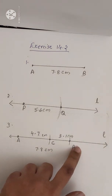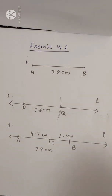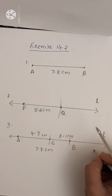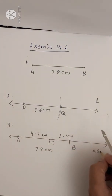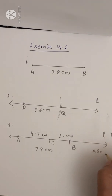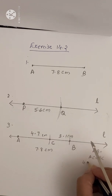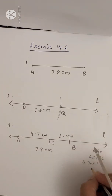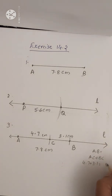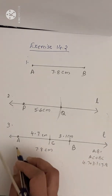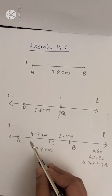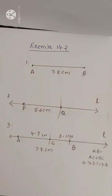We can check your answer by adding: AB equals AC plus BC. AC is 4.7 plus BC is 3.1, which equals 7.8. So we get 7.8 — thus our answer is correct.